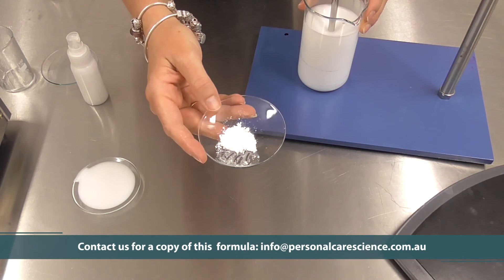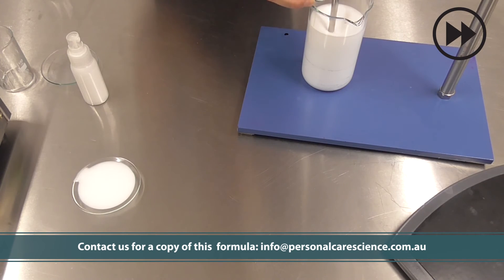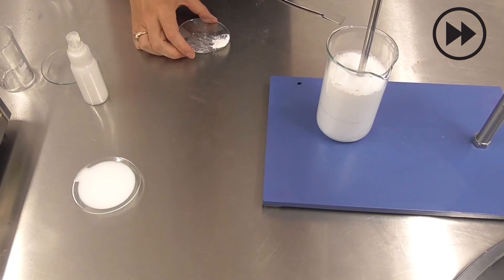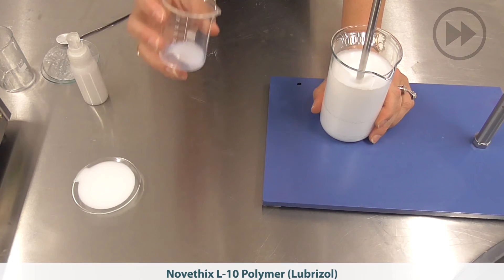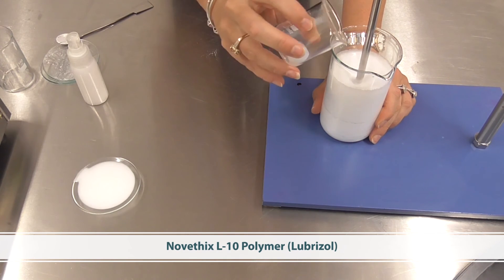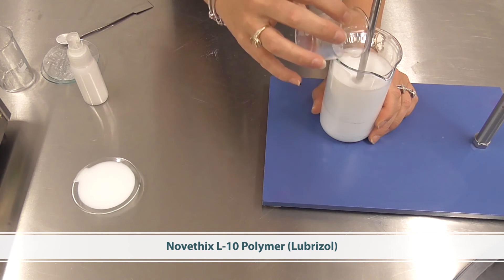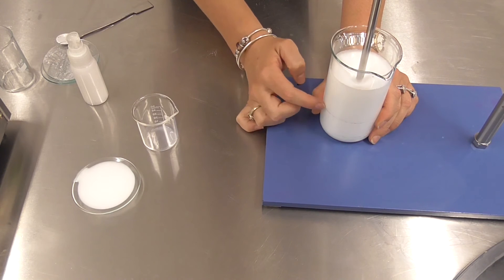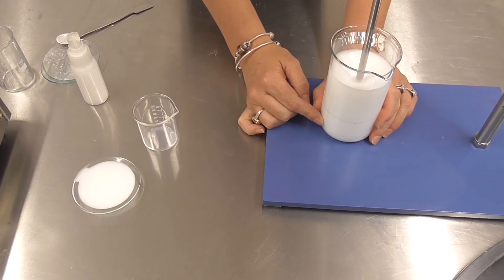So first we're going to add our carbomer to create our gel. And next we're going to add our Novathix L10 polymer. Now that material will also help increase the viscosity but that's the material that's very important to get that beautiful wide spray pattern.